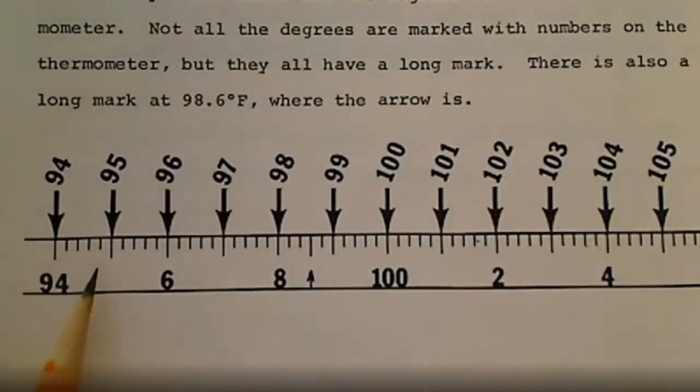Each long line represents one whole number, so that would be right here 95 like it says with the arrow. Then the little tick marks between it is two tenths, point 2. So 94.2, .4, .6, .8, 95.